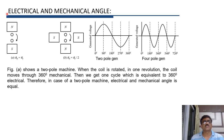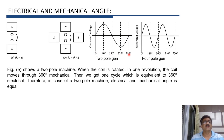The next important concept is the difference between electrical and mechanical angle. In figure A, there is a two-pole machine. When this coil is rotated through one revolution, it is equivalent to 360 degrees mechanical. We get one cycle of generated voltage, which is also equal to 360 degrees electrical. Therefore, in case of a two-pole machine, theta mechanical equals theta electrical.